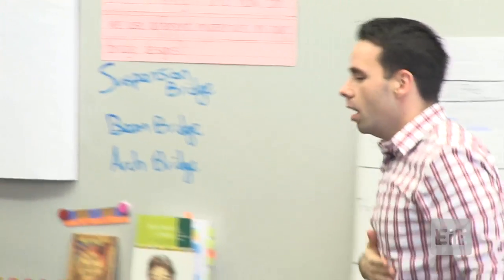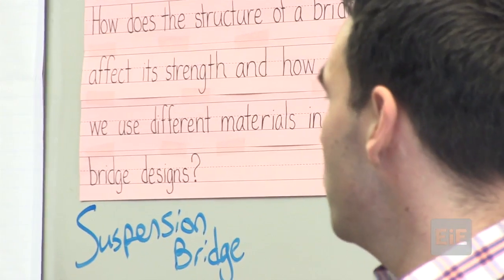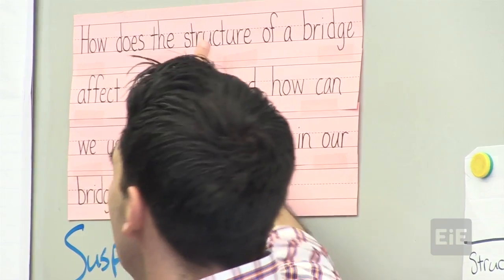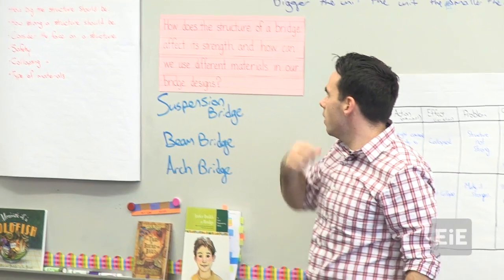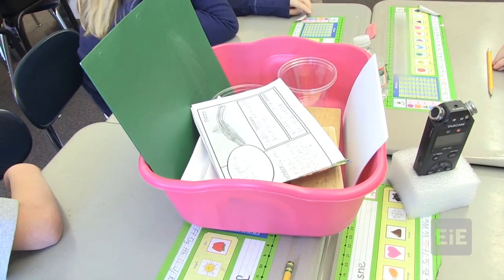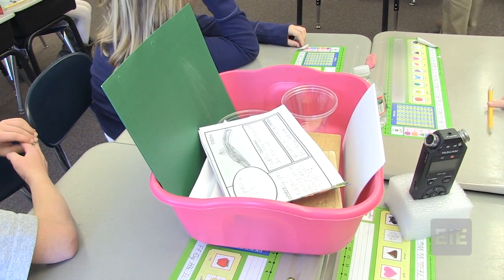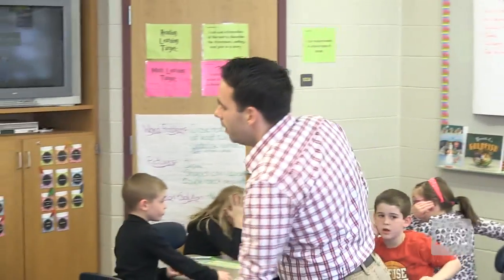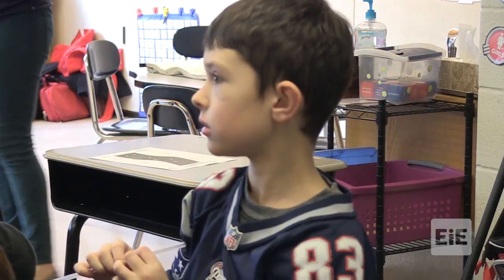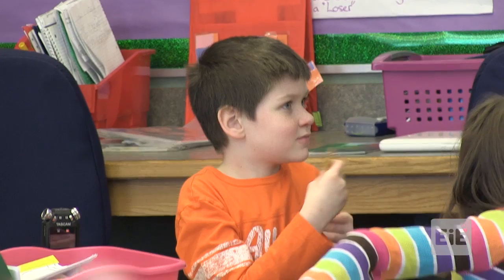Before I talk about today's activity, I want to show you our question: How does the structure of a bridge affect its strength? And how can we use different materials in our bridge designs? We're going to first investigate this question — how does the structure of a bridge affect its strength? In your groups right now, we have different pieces or materials for you to construct three different kinds of bridges.